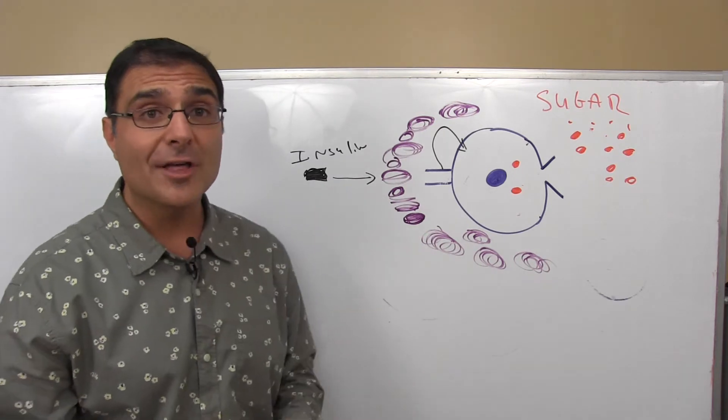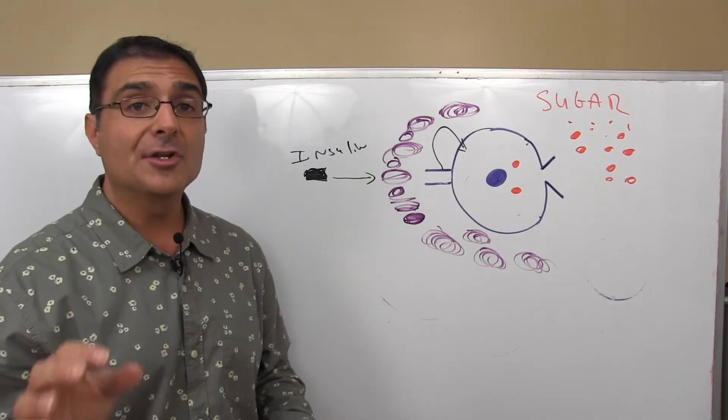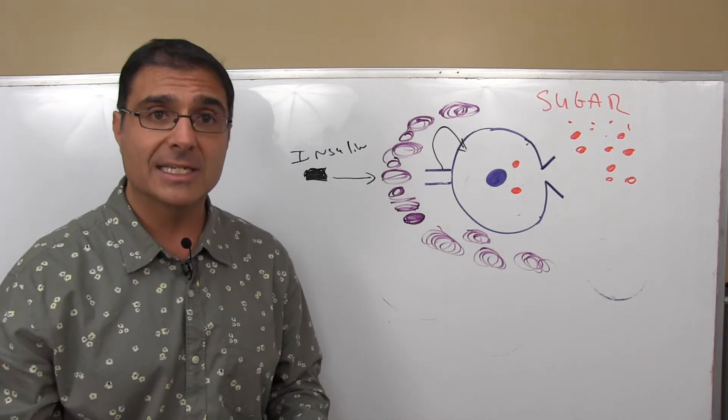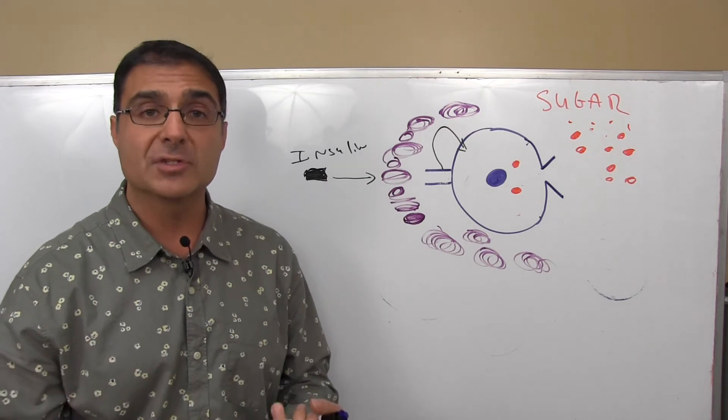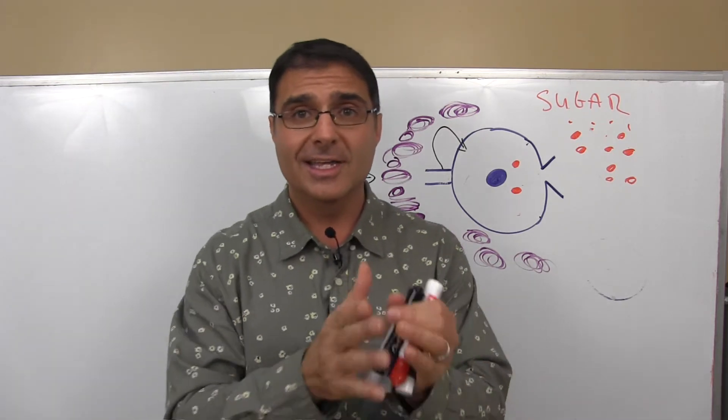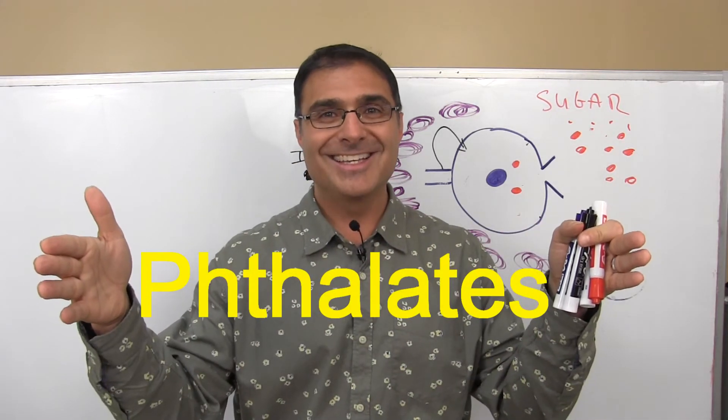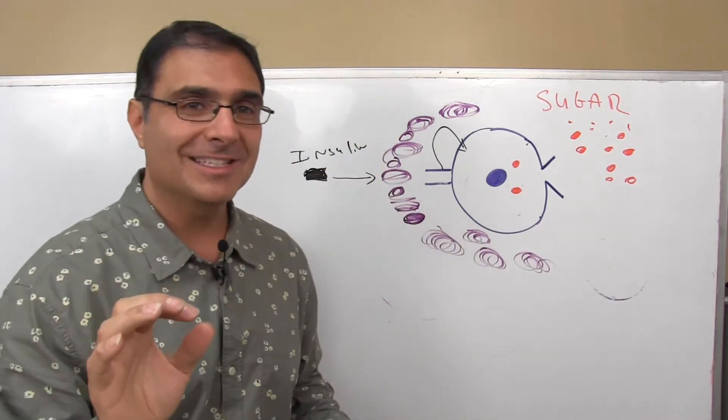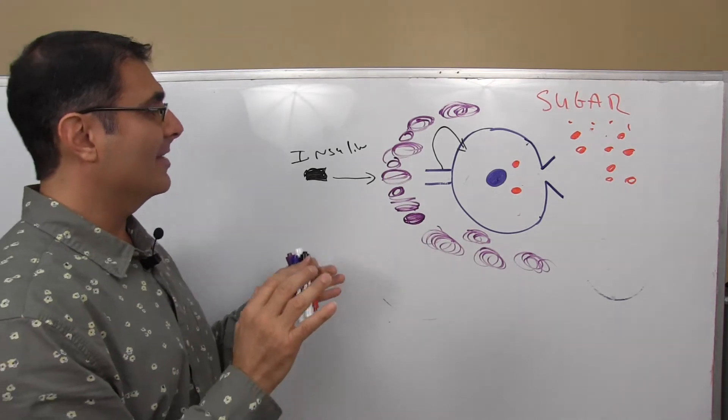So what's another cause of type 2 diabetes? Another cause are toxins, particularly endocrine disruptors like phthalates, which come from plastics. I'll put the name here. Here's the word phthalate. So strange word, lots of pHs in there. So phthalates,